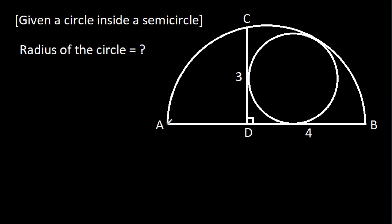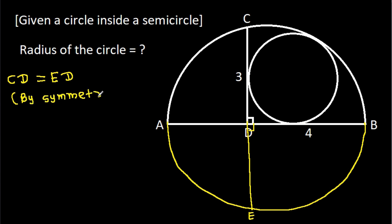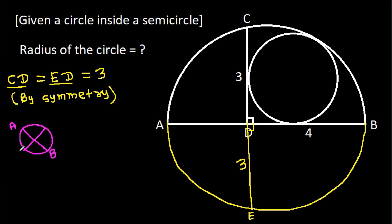If we complete the circle and extend CD to point E, then CD will be equal to ED by symmetry. Since CD is 3, ED will also be 3. In any circle, if two chords AB and CD intersect at O, then AO times BO equals CO times DO.